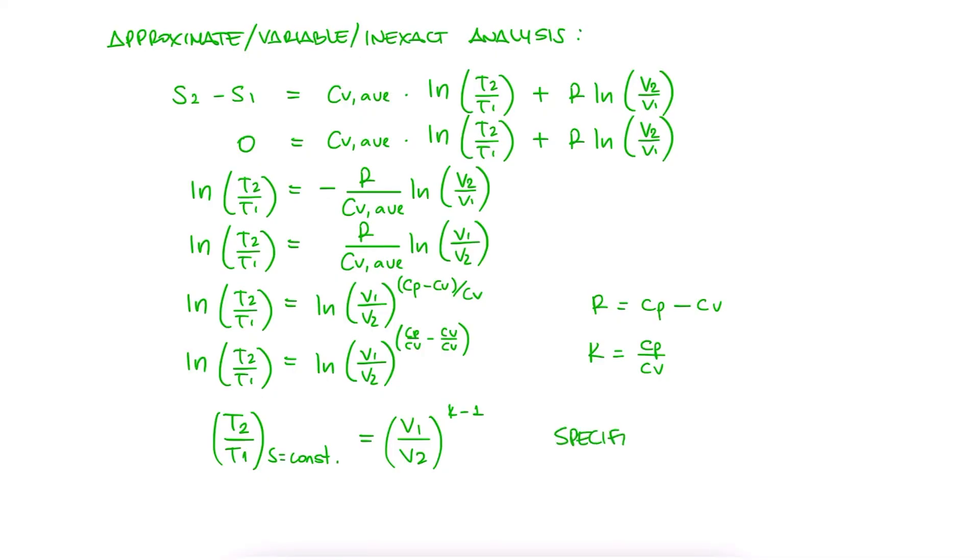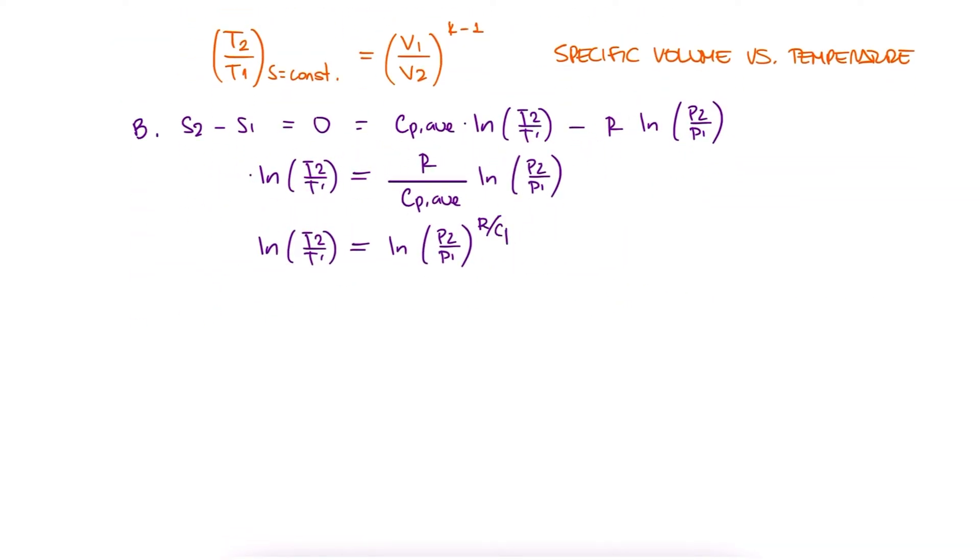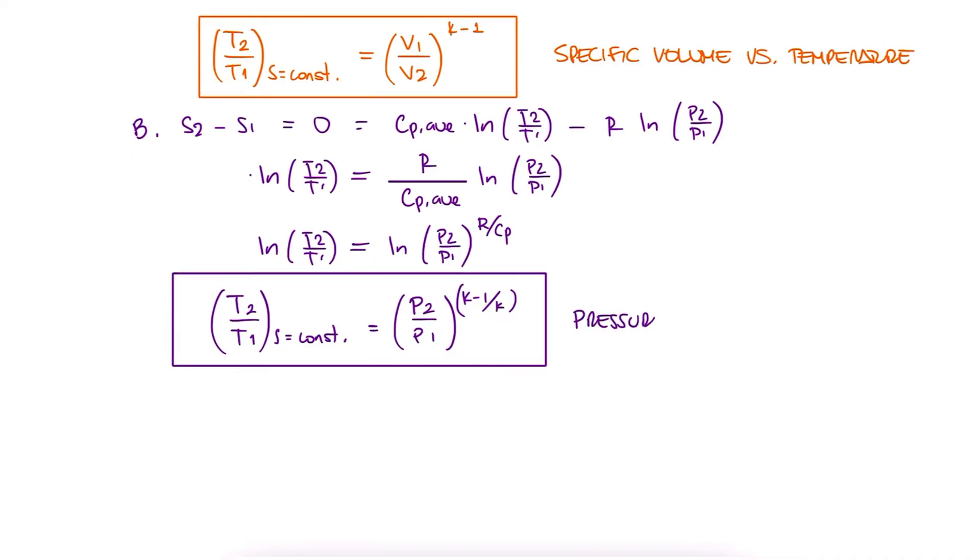This is of course helpful to relate specific volumes and temperatures. Now when we carry out a similar process with the second equation of the approximate analysis, we end up with T2 over T1 equal to P2 over P1 to the k minus 1 over k.